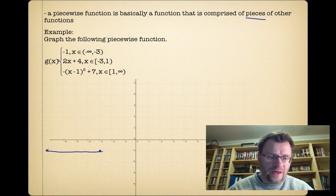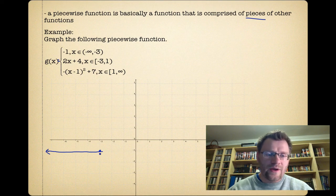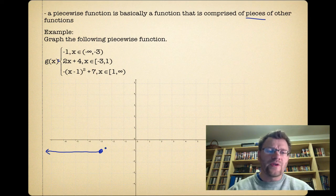Now, negative three is an open bracket, so I should have put an open circle here. So it looks like a horizontal line from negative infinity to negative three.